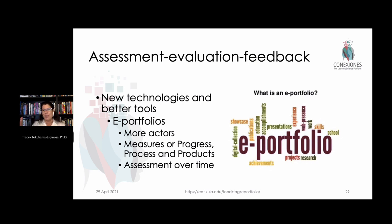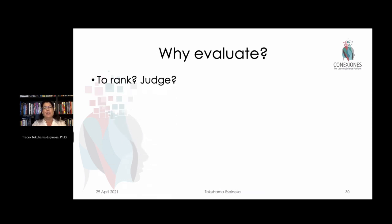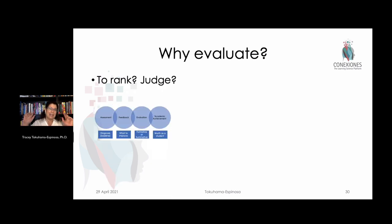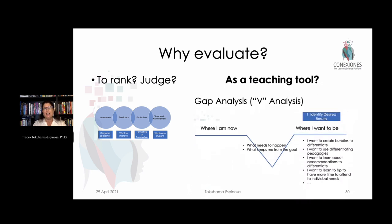E-portfolios were around before the pandemic, but they got picked up during it because standardized tests weren't available. The beauty of e-portfolios became apparent to everybody — they gave a more complete, holistic picture of the individual student. This makes us question the way we used to do evaluation. Is it really to determine the worth of a kid or their success in school? Should we instead be thinking about evaluation as a teaching tool — a gap analysis of where the kid is versus where we want them to be?